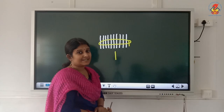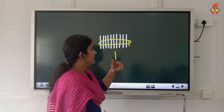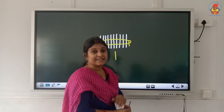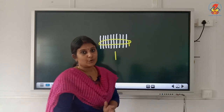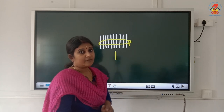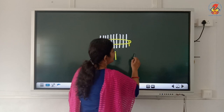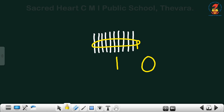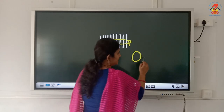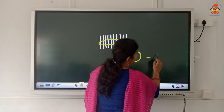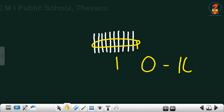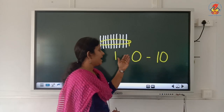Repeat: 1 ten. Is there any singles left? No. If there are no singles, we will write 0. So, 1 ten and 0 singles makes number 10. Repeat: 1 ten and 0 singles makes number 10.